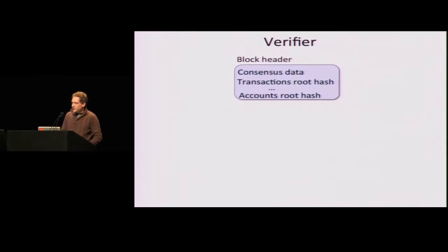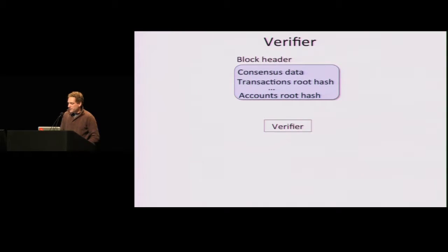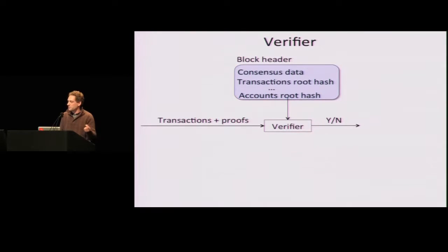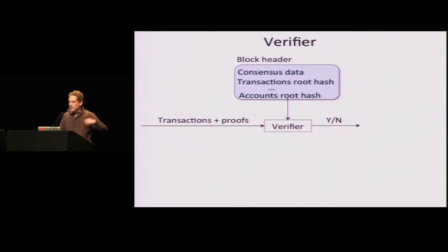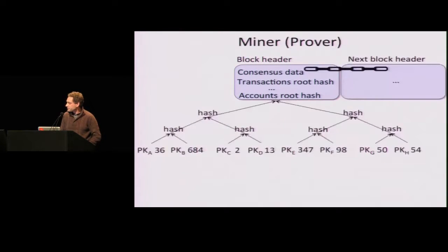From the verifier's point of view, the verifier gets the block header — again assuming the root hash can be trusted — then takes the root hash, the transactions and proofs for each one, does the Merkle verification and outputs yes or no. This is important because we're trying to prevent denial-of-service attacks, because Merkle paths are short — they're logarithmic in the size of the key-value store. The verifier can do this quickly, so denial-of-service should not be an issue.